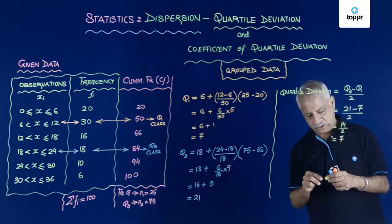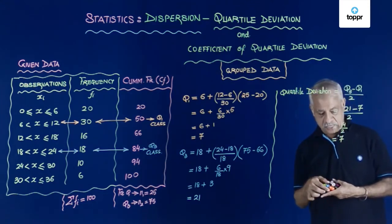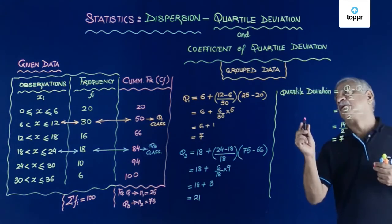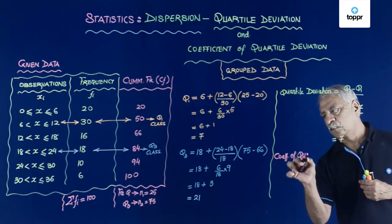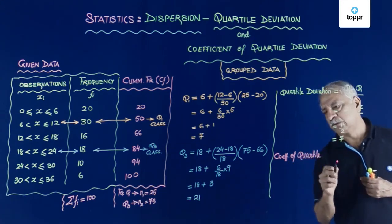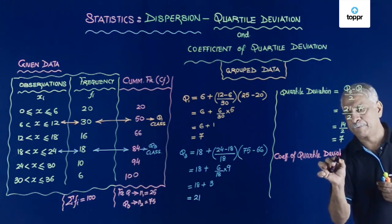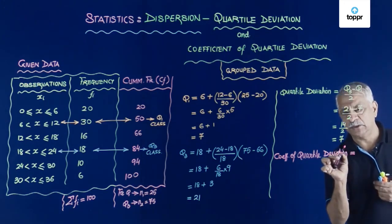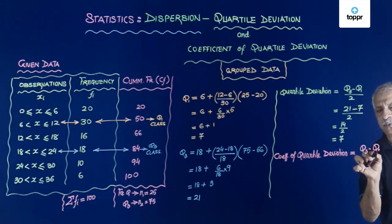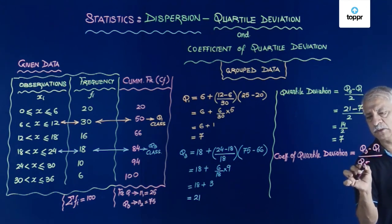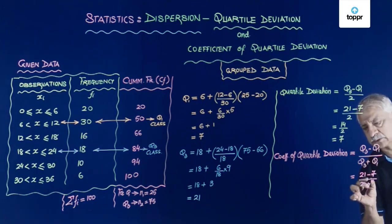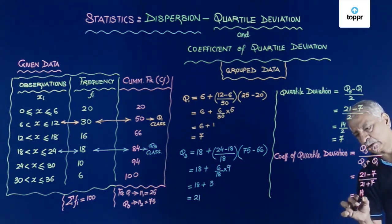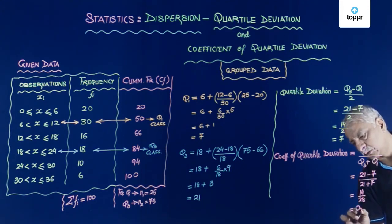And I have coefficient of quartile deviation. This is equal to Q3 minus Q1 upon Q3 plus Q1, which is 21 minus 7 upon 21 plus 7, which is 14 upon 28, which is equal to 0.5. So the coefficient of quartile deviation is 0.5.